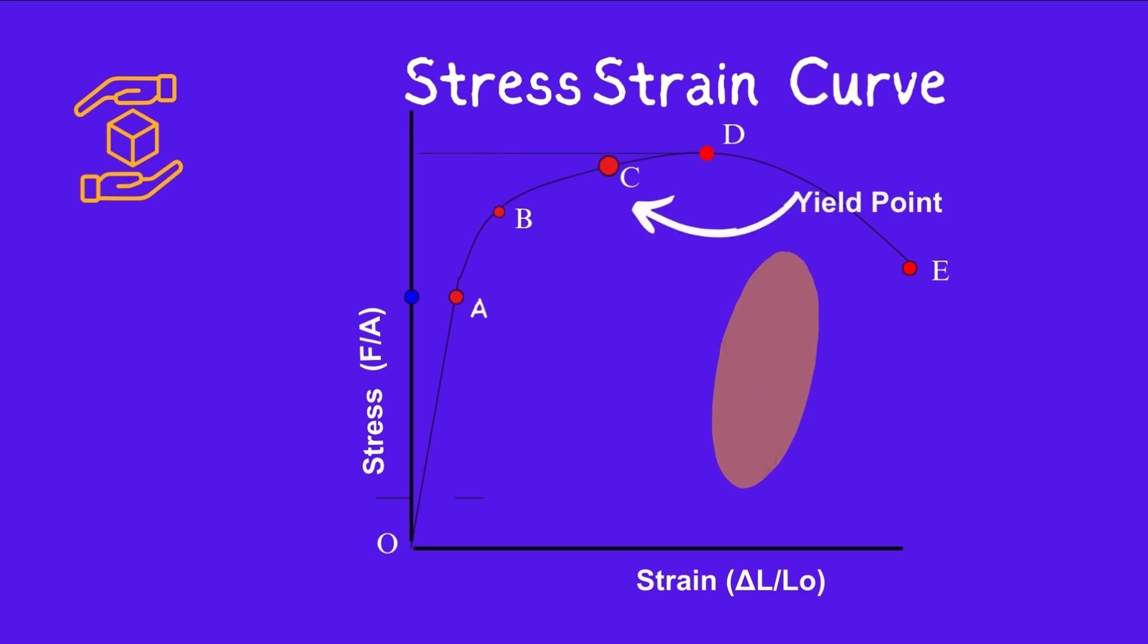Three: Yield point. The yield point is defined as the point at which the material starts to deform plastically. After the yield point is passed, permanent plastic deformation occurs. There are two yield points: upper yield point and lower yield point.